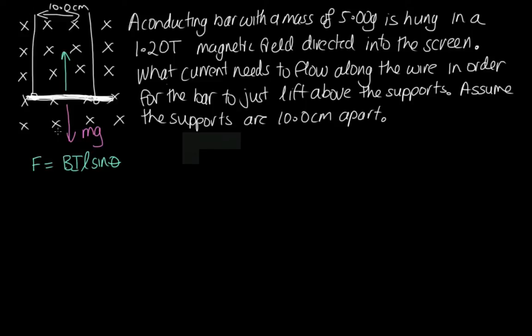So the first thing we can do is use our right hand rule in order to work out the direction that the current must flow. So the magnetic field is going into the screen, so your fingers point into the screen.